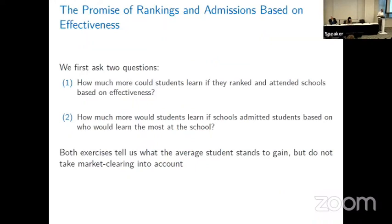Let's look at the promise. Imagine we could have students rank and attend schools based on effectiveness — what would be the outcome? That's the demand-side policy, the recommendation engine agenda. The second question is: instead of fighting about how many kids should get into Stuyvesant High School in New York City, what would happen if schools admitted students based on who would learn the most at the school?